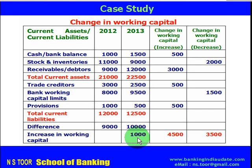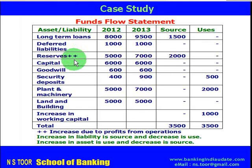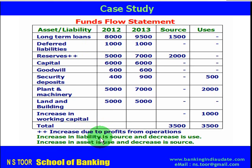The second stage is to prepare the funds flow statement. This increase in working capital of 1,000 will be included in the funds flow statement. The funds flow statement covers liabilities other than current liabilities and assets other than current assets, taken from the balance sheet provided in this case study — with information for year 12 and year 13. The key principle is: increase in liability is a source, decrease in liability is a use; increase in asset is a use, and decrease in asset is a source.